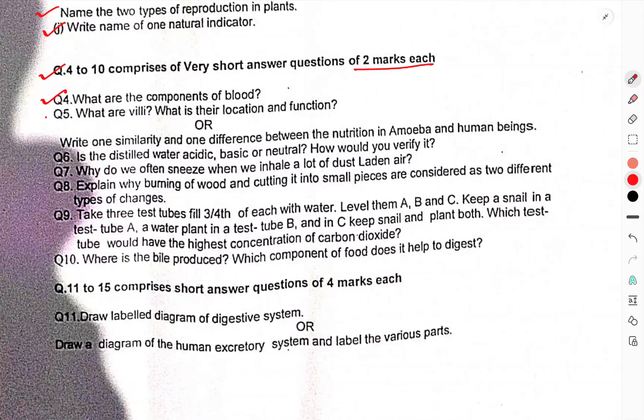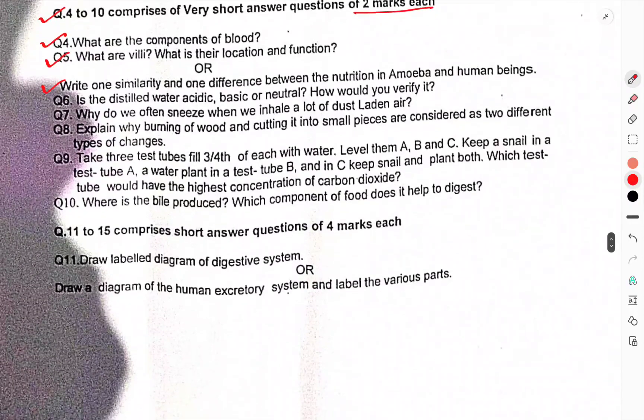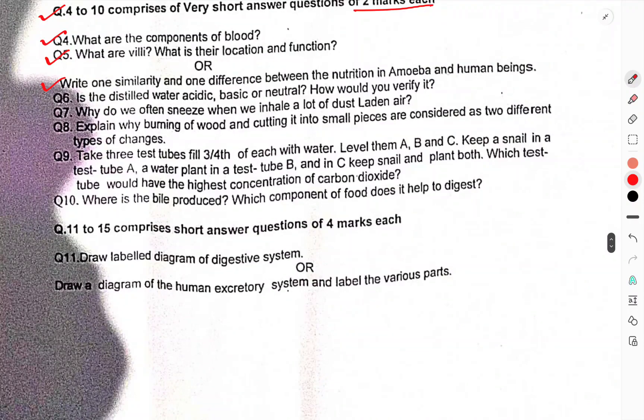Questions 4 to 10 comprise very short answer questions carrying two marks each. Question 4: What are the components of blood? Question 5: What are their location and function? Write one similarity and one difference between the nutrition in amoeba and human beings. Question 7: Why do we often sneeze when we inhale a lot of dust? Question 8: Explain why burning of wood and cutting it into small pieces are considered two different types of changes.